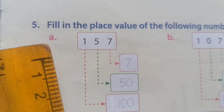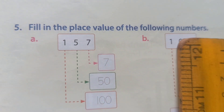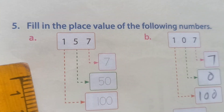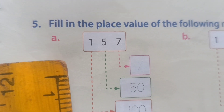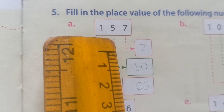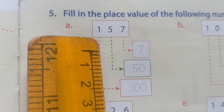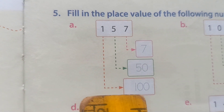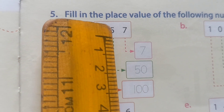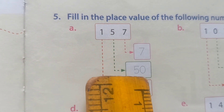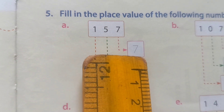Fifth question: Fill in the place value of the following numbers. First one, A number — our textbook showing how to solve. 157 means: 1 place value 100, 5 place value 50, and 7 — 7 ones.